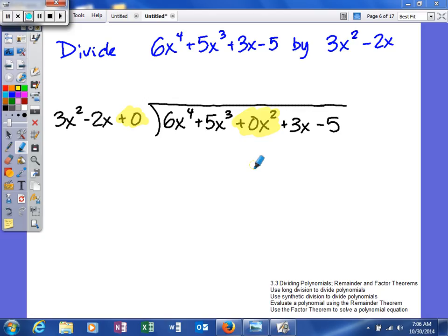I've already set up my problem. I need to make sure that they're in descending order, and if I'm missing any terms, I need to hold the place value. This isn't a must for every single problem, but it's a good habit to get into because we will be required to do it later on. My divisor had a quadratic term and a linear term, so I wrote in plus 0 for my constant.